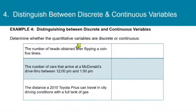Now let's look at these quantitative variables and decide if they are discrete or continuous. So first up, the number of heads obtained after flipping a coin five times. Well, the question is, would you count the number of heads obtained or would you measure it? Well, you would count either 1 or 2 or 3 or 4 or 5 heads come up when you flip the coin. So that's going to be discrete.